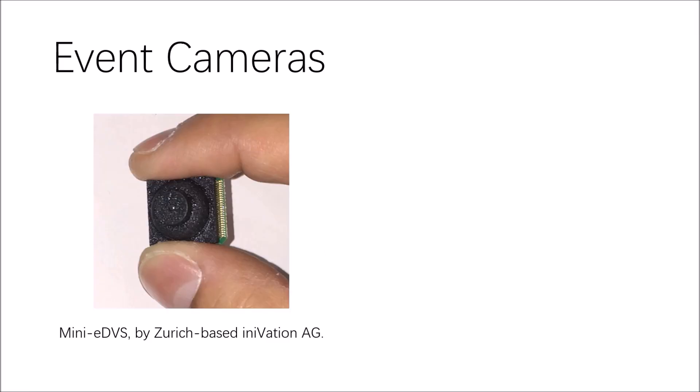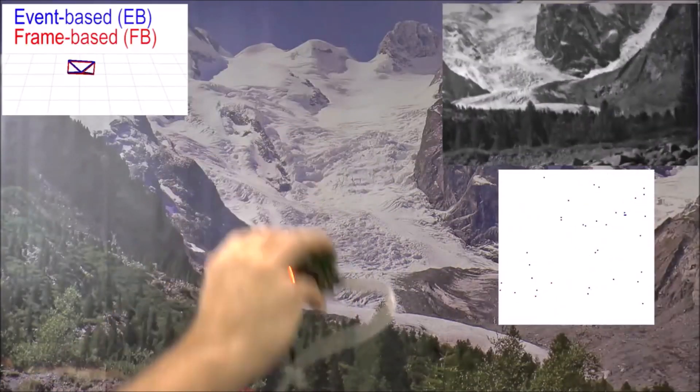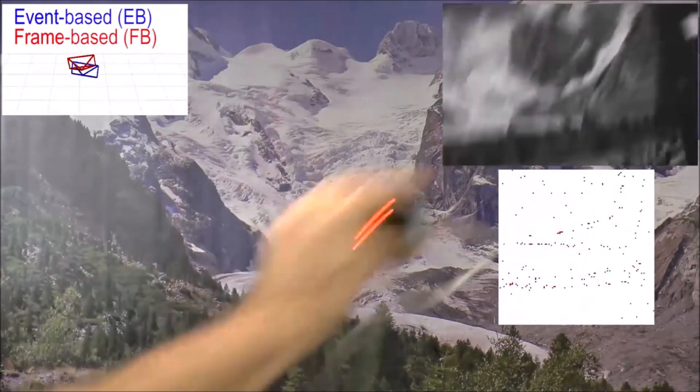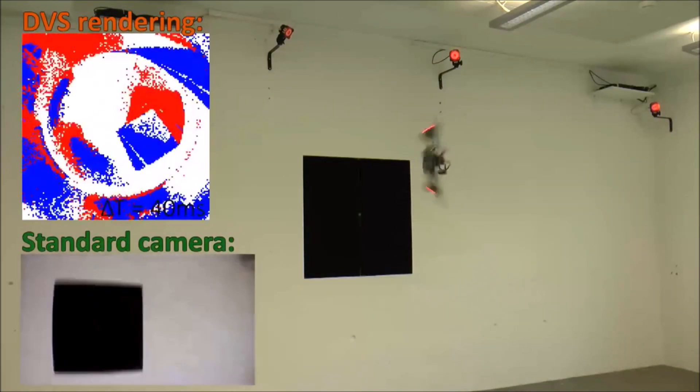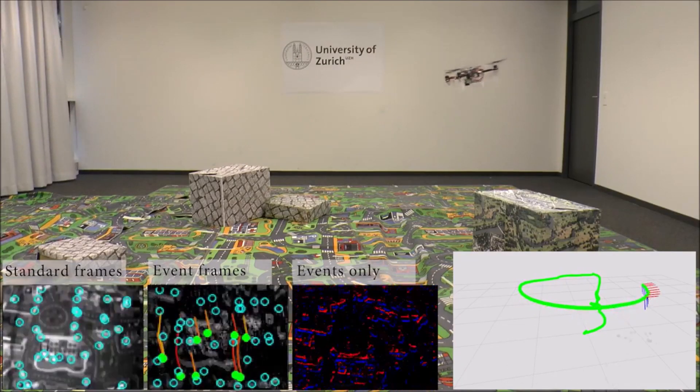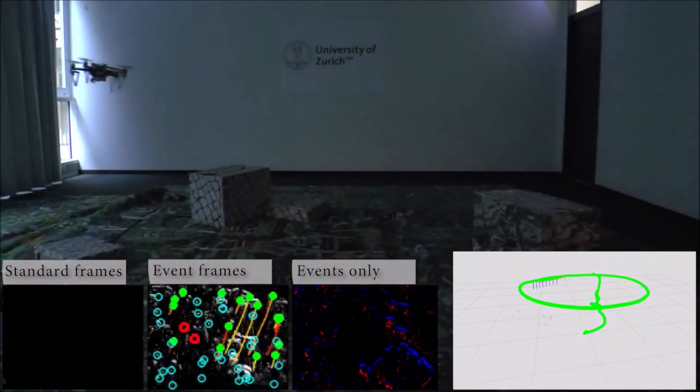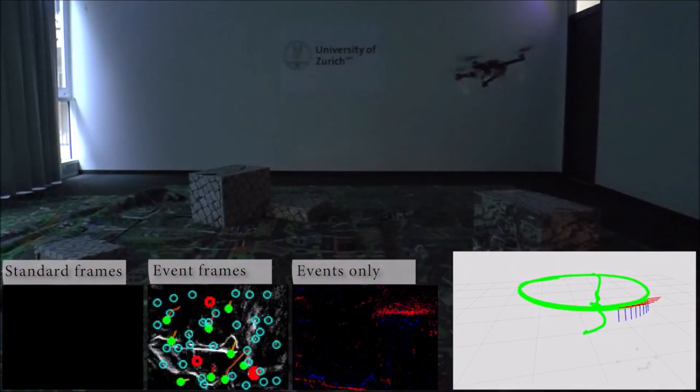This bio-inspired sensor offers several advantages such as low latency, high temporal resolution, and high dynamic range, which open the door to tackle challenging scenarios that are inaccessible to standard cameras, such as high-speed or high dynamic range tracking, control, and simultaneous localization and mapping.